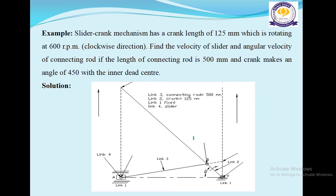Slider crank mechanism has a crank length of 125 mm which is rotating at 600 rpm in clockwise direction. Find the velocity of slider and angular velocity of connecting rod if the length of connecting rod is 500 mm and crank makes an angle of 45 degrees with the inner dead center.